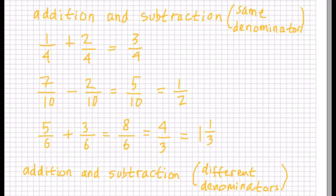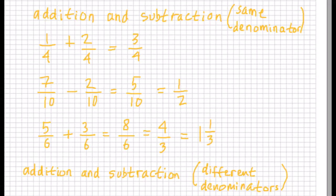Next, 5 over 6 plus 3 over 6 is equal to 8 over 6, or simplifying, that is equal to 4 over 3. But this fraction 4 over 3 is an improper fraction, so we can write it as 1 plus 1 over 3.